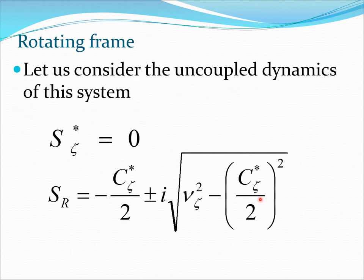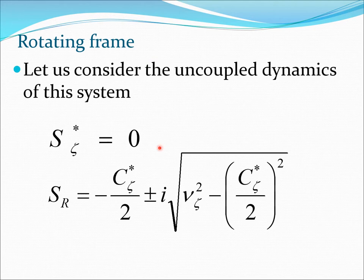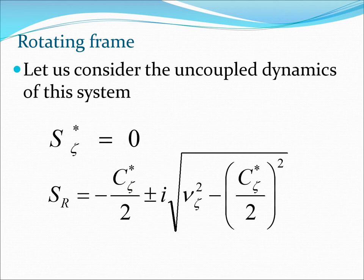Now we are going to consider some aspects to give us a physical understanding of ground resonance. Of course mathematically, if you simply look at the stability of that system and calculate the eigenvalues from the characteristic polynomial, you will know whether the system is stable or not. But let's look at some particular cases. If s_zeta_star is zero, we get the uncoupled dynamics of the system, which would be totally dependent on the damping in the lag mode and the frequency in the lag mode.